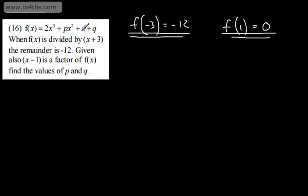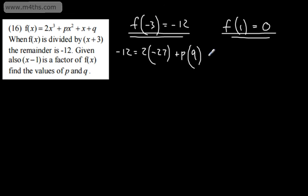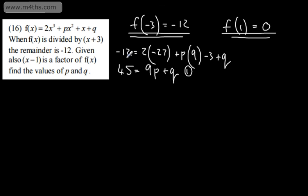Substituting into f(-3) equals -12: negative 12 equals 2(-27) plus 9p plus (-3) plus q, which simplifies to negative 12 equals negative 54 plus 9p minus 3 plus q, so negative 12 equals negative 57 plus 9p plus q. Adding 57 to both sides gives 45 equals 9p plus q. I'll call this equation 1.